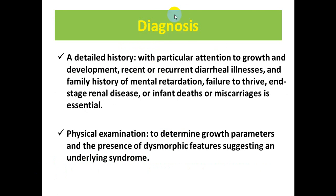To diagnose renal tubular acidosis, start with a detailed history with particular attention to growth and development, history of dehydration, vomiting, constipation, abdominal pain, recurrent diarrhea, and family history of mental retardation, failure to thrive, end-stage renal disease, infant deaths, or miscarriage. Physical examination should focus on growth parameters to identify growth failure and look for dysmorphic features suggesting an underlying syndrome.